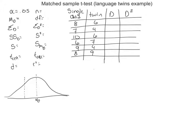In the last couple of examples we did 0.05, so let's go with 0.01 for this one. And it's going to be a one-tailed test, because we're just trying to find this critical region — do the twins develop language at a statistically significantly lower rate than only children?